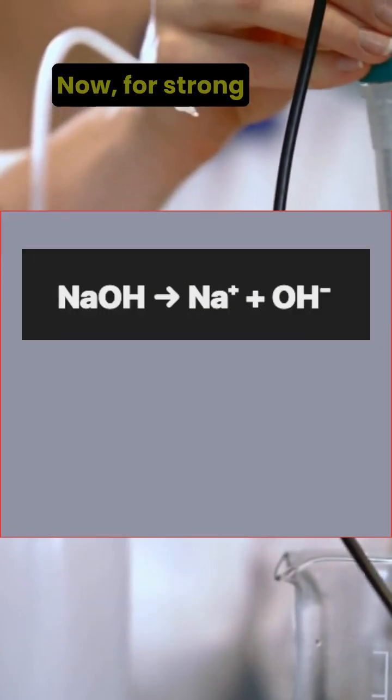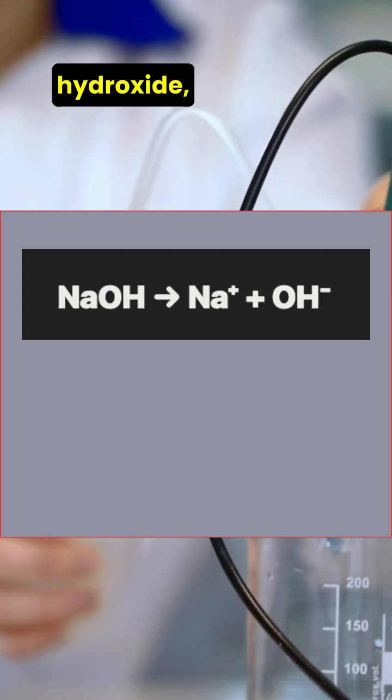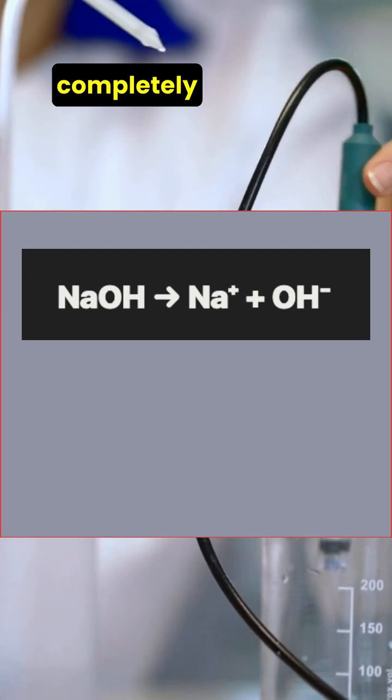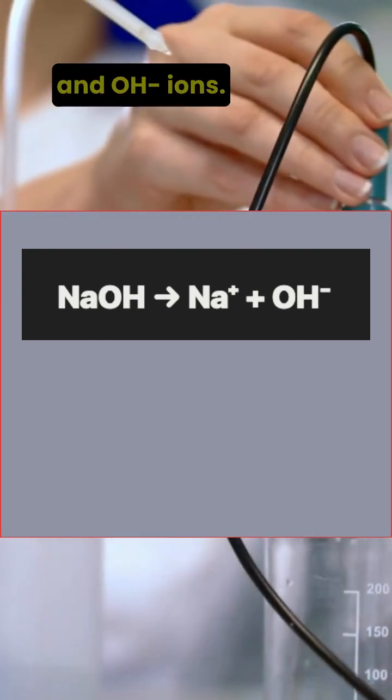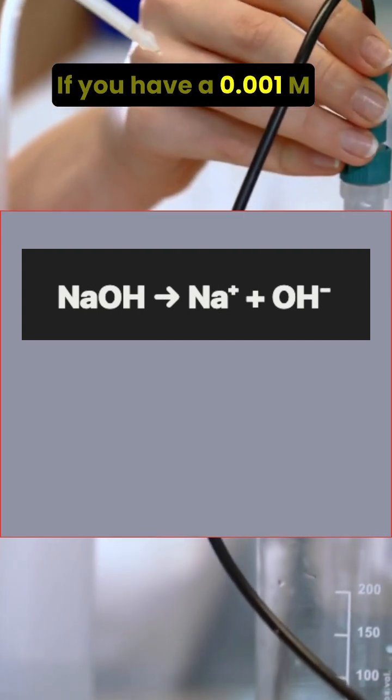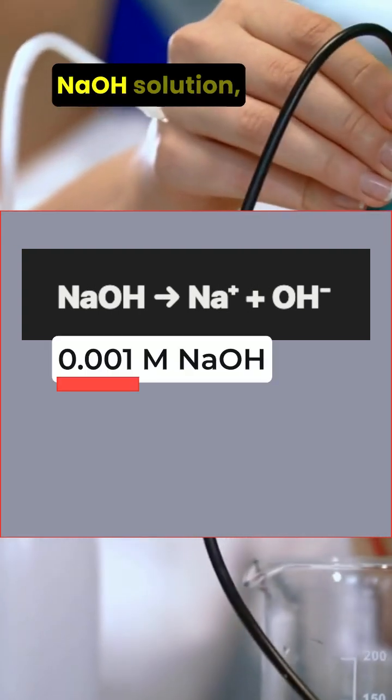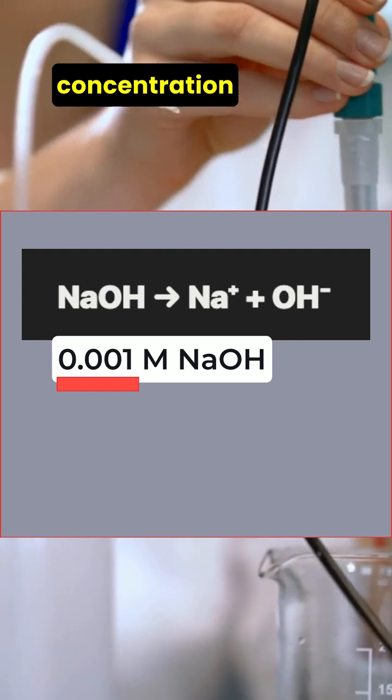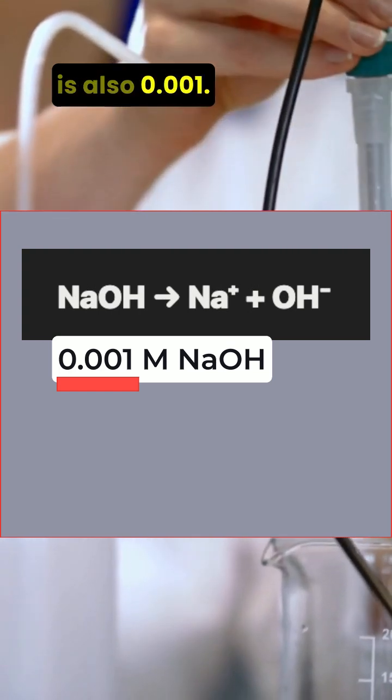Now for strong bases, like sodium hydroxide, written as NaOH, it dissociates completely into sodium ions and OH- ions. If you have a 0.001 molar NaOH solution, that means the OH- concentration is also 0.001.